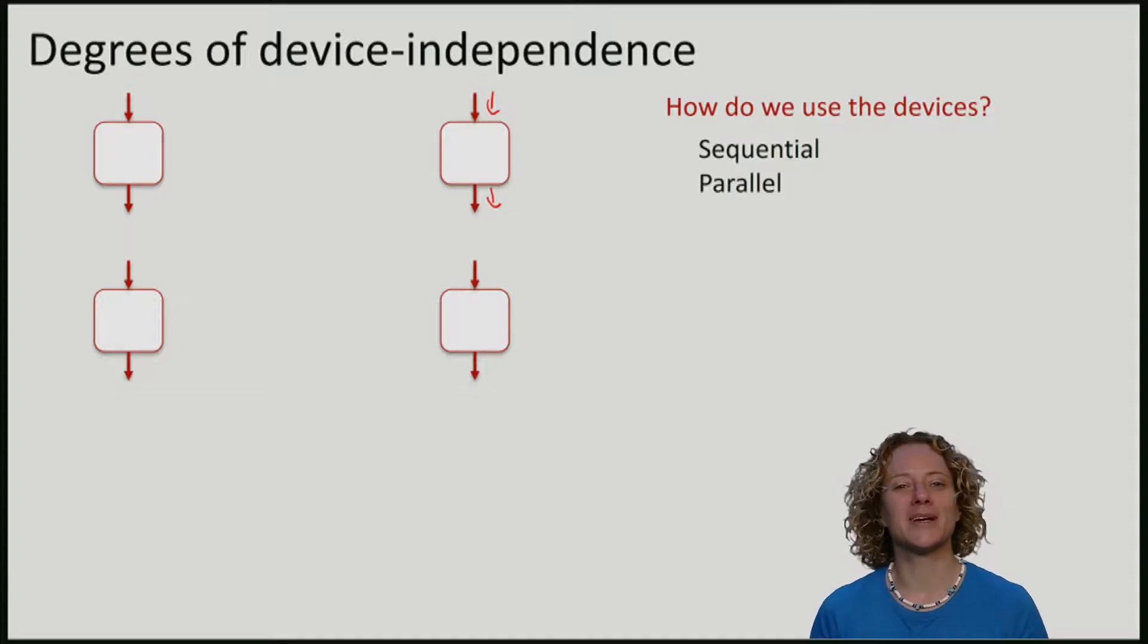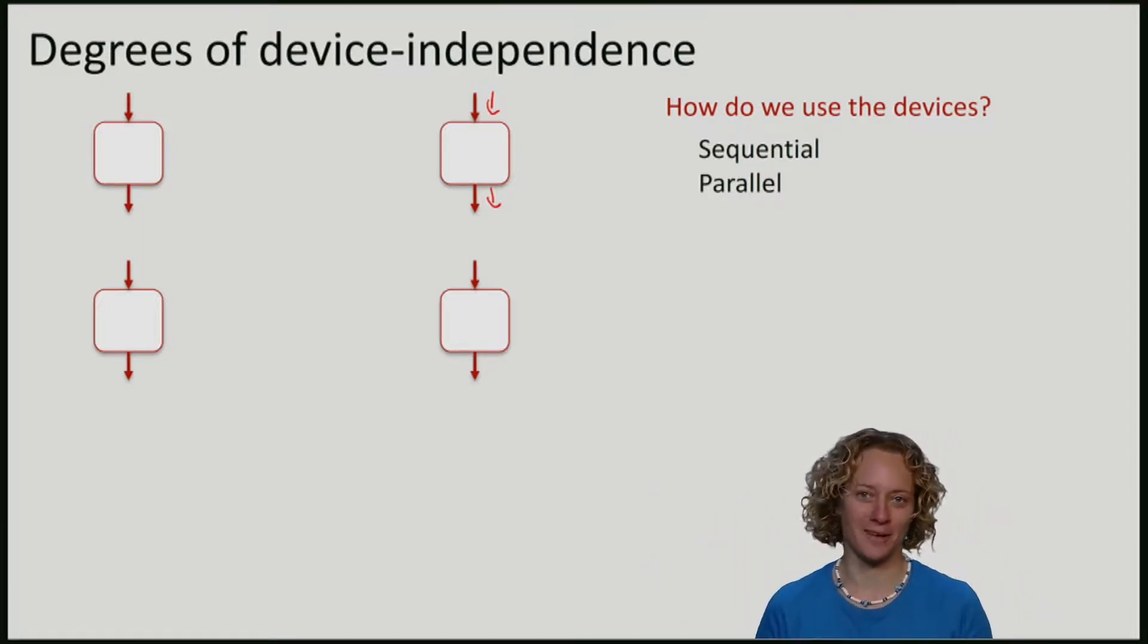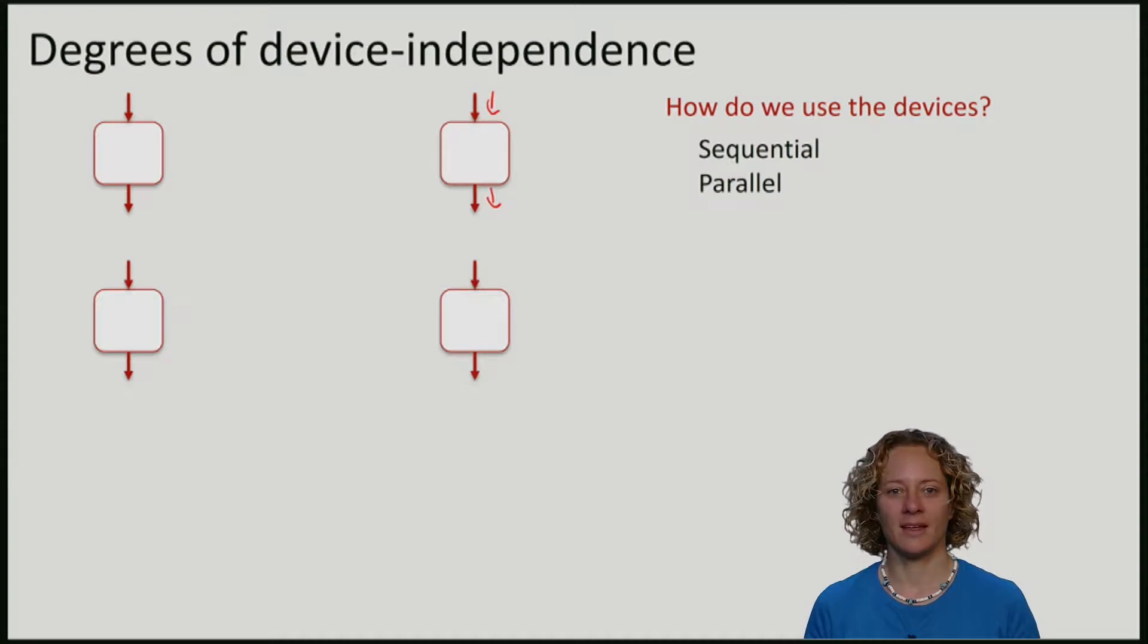It is also possible to consider fully parallel use of the device. But of course this only makes sense if I actually have many possible devices, and I can actually use them in parallel. This means that I give all of the inputs at the same time, and only afterwards I get the outcome. In practice, there is no such thing typically as Alice and Bob having millions of devices. So the sequential case is the one which is relevant in practice.